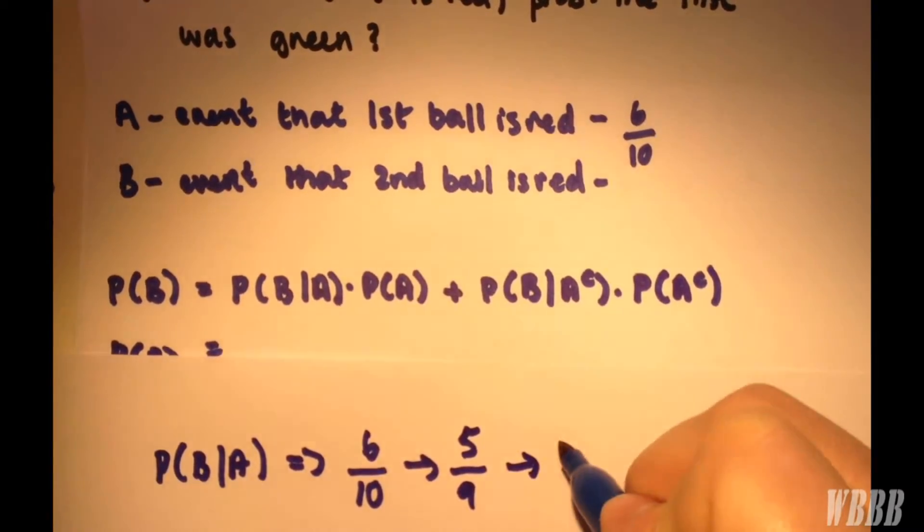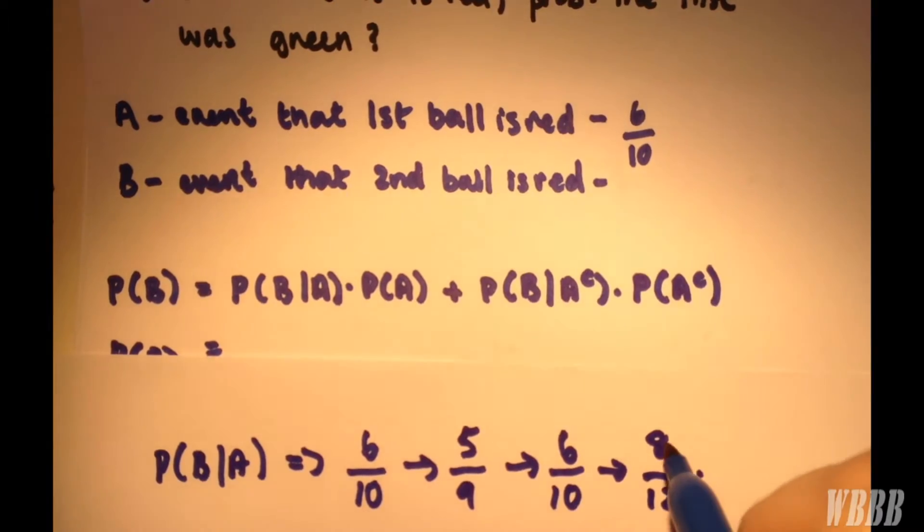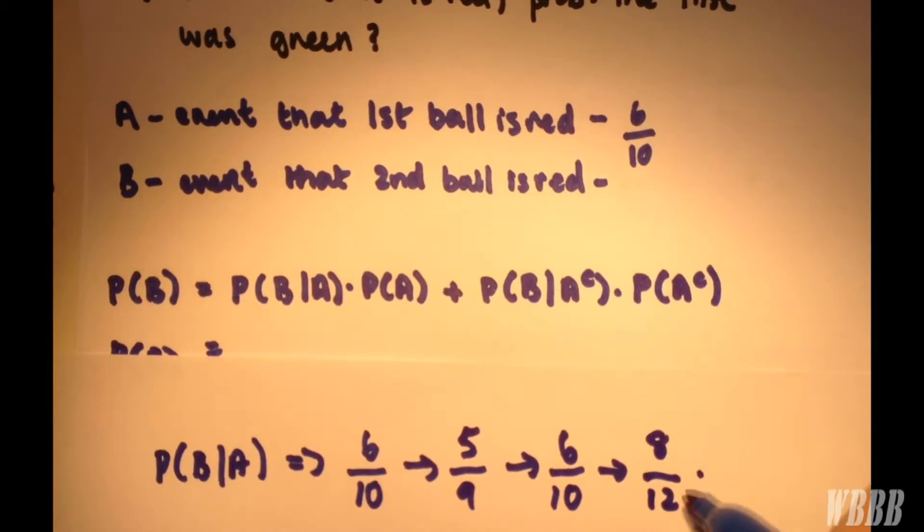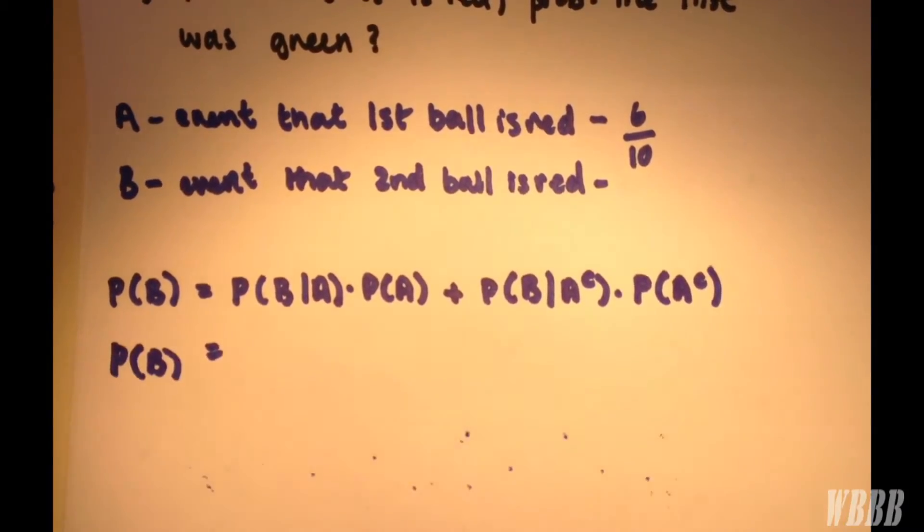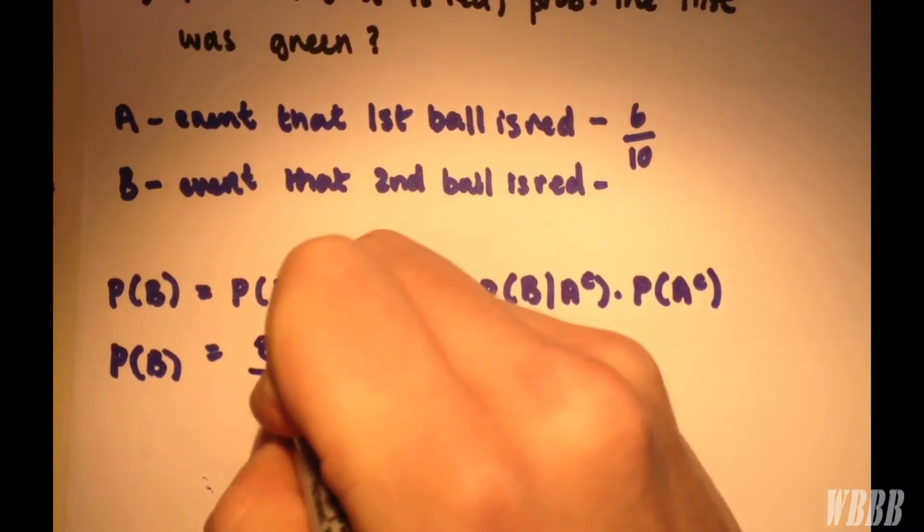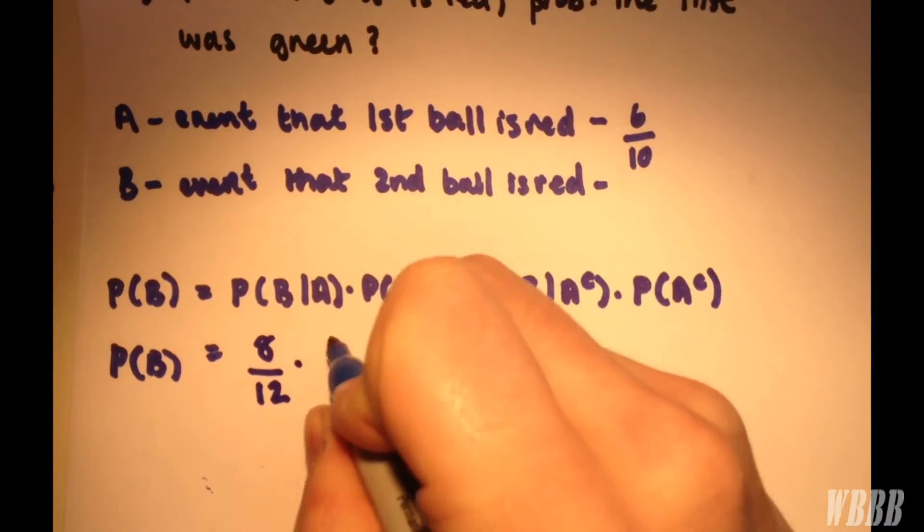But then it's replaced, so it goes back up to 6/10. Then they add two more balls of the same color, so we have 8/12. When it comes to the second choice, we have eight red balls out of twelve balls overall. So the probability of choosing a red ball given that the first was already red is 8/12. And probability of A is 6/10.